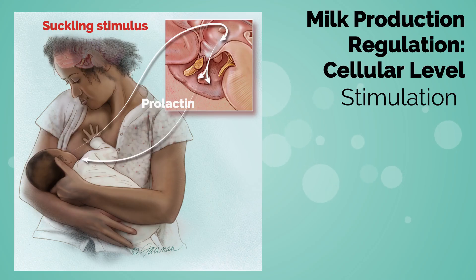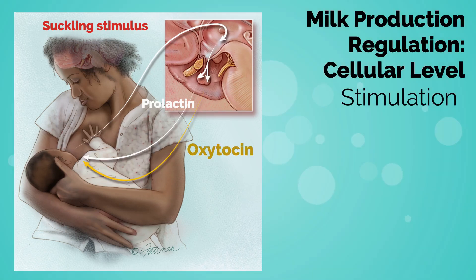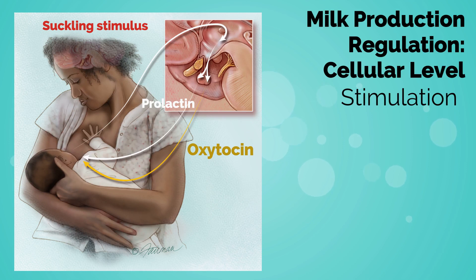Through a positive feedback loop, breast stimulation via suckling or mechanical stimulation also leads to spikes in prolactin release which aids in regulation. The level of the spike is not correlated to the amount of milk produced. Finally, it is important to remember that milk ejection is controlled by a different pathway and requires oxytocin to trigger the myoepithelial cells to contract and force milk out of the lactiferous ducts.